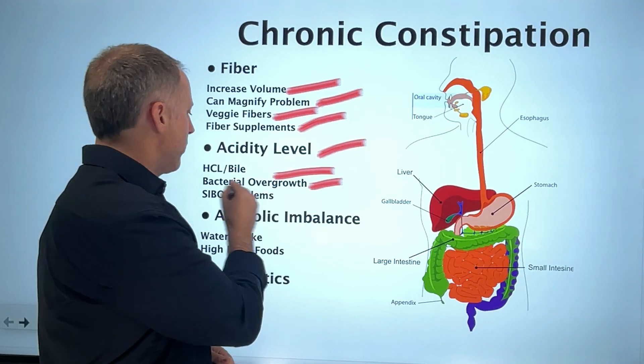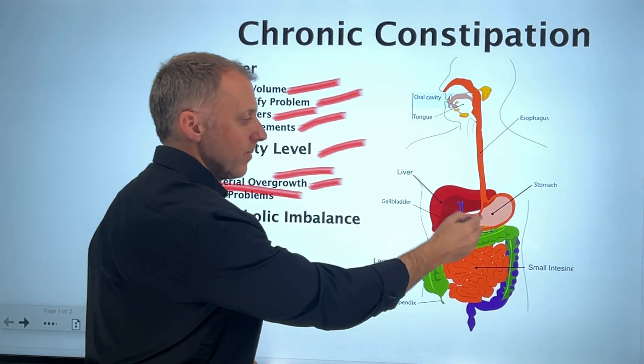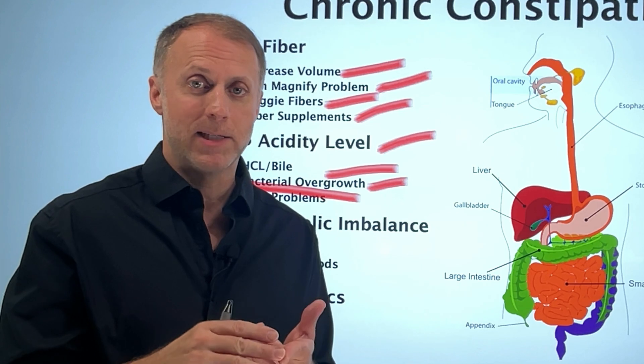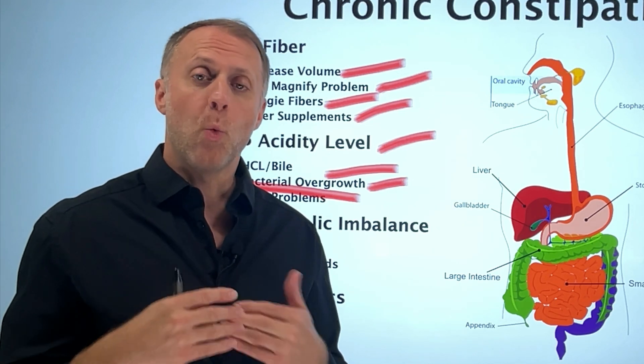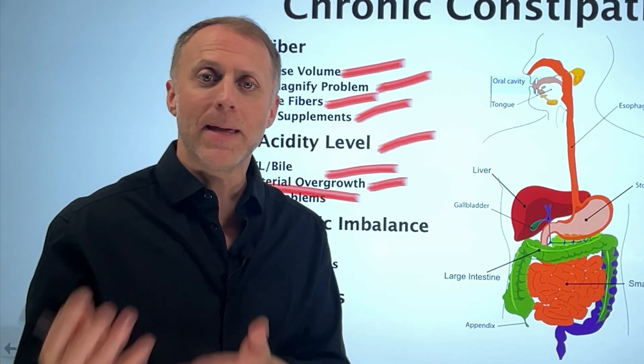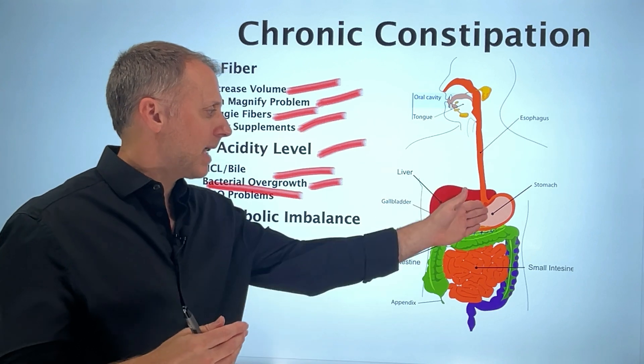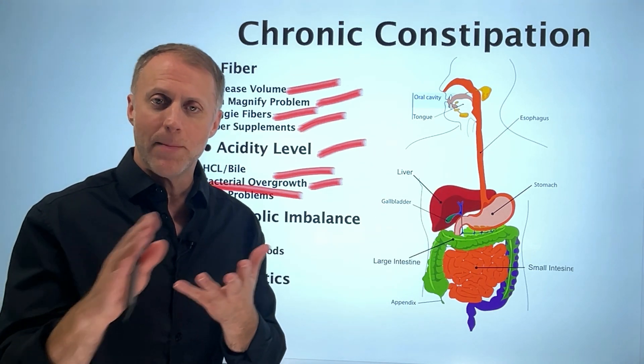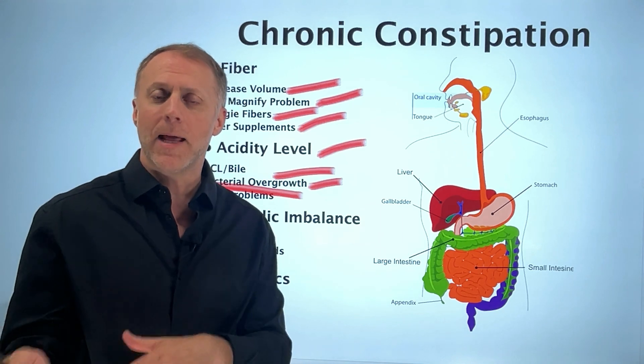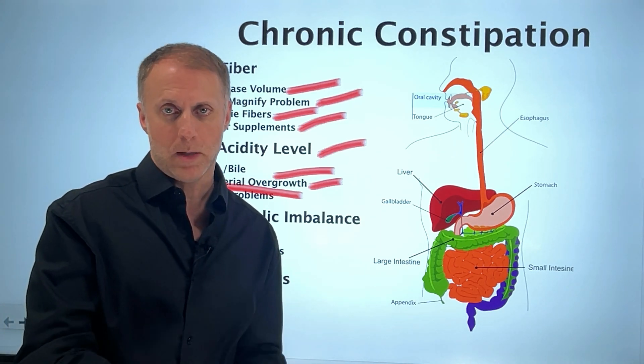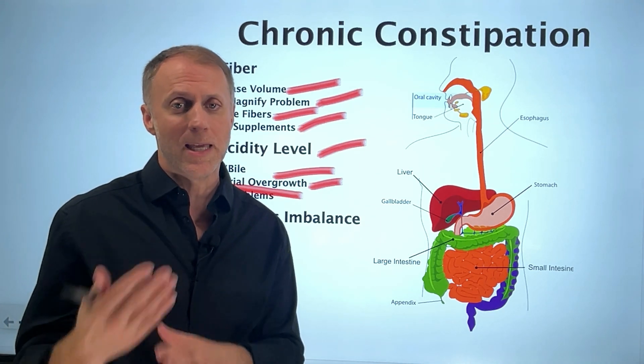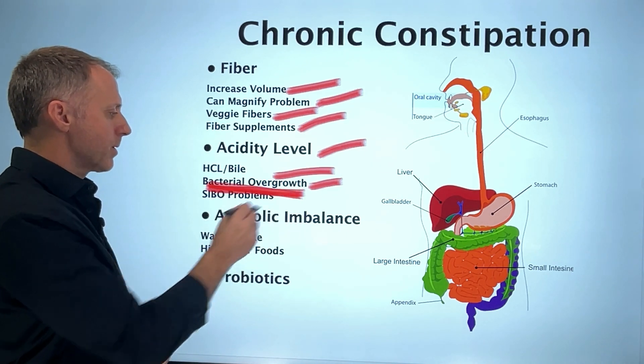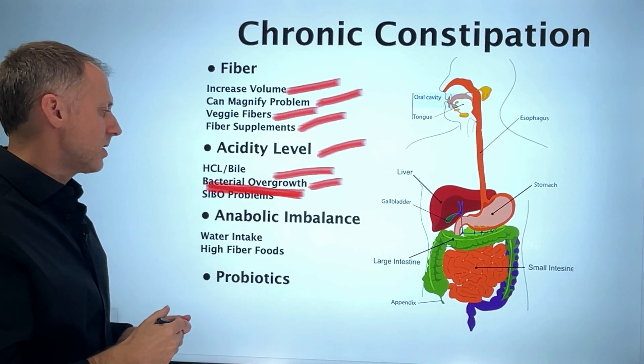But when there's a bacterial overgrowth, either in the stomach or in the small intestine, for a lot of types of bacteria and other microorganisms, the waste product that they put out can be alkaline, which means they're alkalizing the stomach or intestinal tract even more, which is going to make that stool more alkaline, which means it's going to move through even slower. So this can be an important factor when it comes to probiotics.